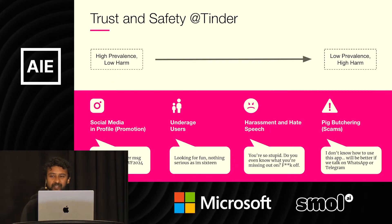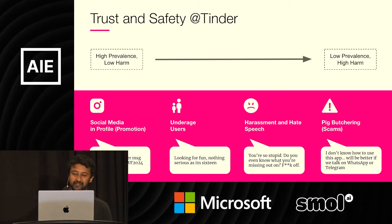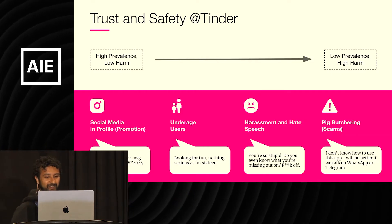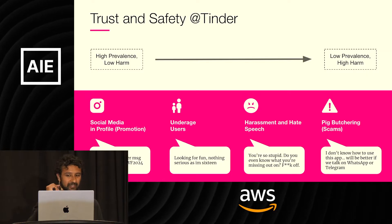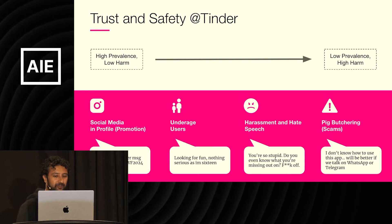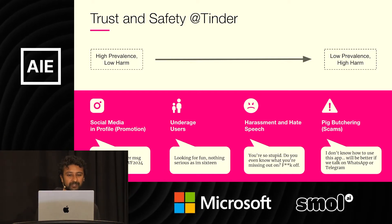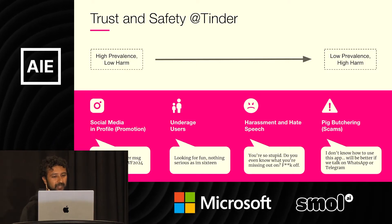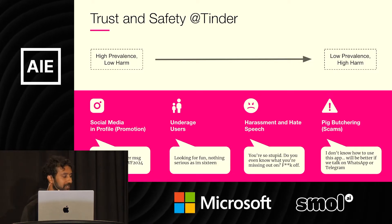As the largest dating app in the world, we encounter many, many types of violative behavior on Tinder. Here are some of the different categories and a representative synthetic textual example of each. First, we have social media in your profile, a relatively minor but rather prevalent violation of our private information policy, and it's often done by low-intent users. On the other side of the spectrum, we have things that are low prevalence but high harm, like hate speech, harassment, and pig butchering scams.